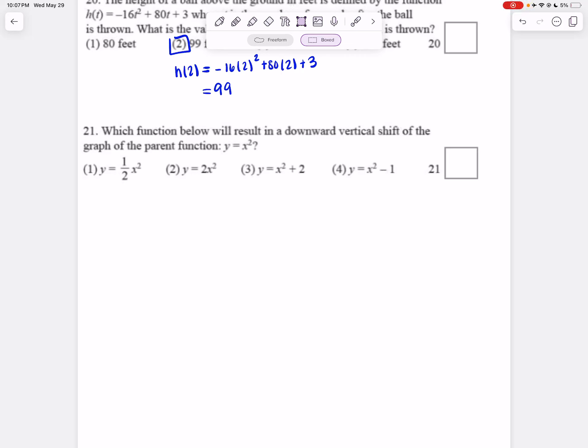Number 21. Which graph below will result in a downward shift, or a vertical shift, of the graph of the parent function y equals x squared?